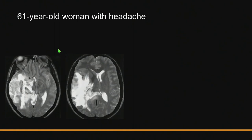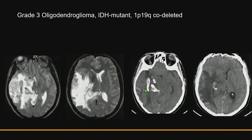In contrast, this case is very heterogeneous, very large, with a lot of edema — in an older patient, easily suggesting high-grade glioma or glioblastoma. But on CT, you can see coarse calcifications. This is a grade 3 oligodendroglioma with a component that has already transformed, but it retained the calcification telling us it was probably a well-behaving grade 2 tumor that had time to evolve into this large mass.